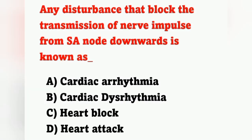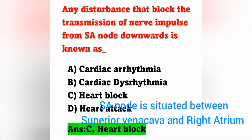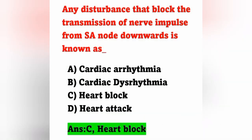Next question: any disturbance that blocks the transmission of nerve impulses from the SA node downwards is known as what? The SA node is situated between the superior vena cava and right atrium. The correct answer is heart block. Option C is the correct answer.